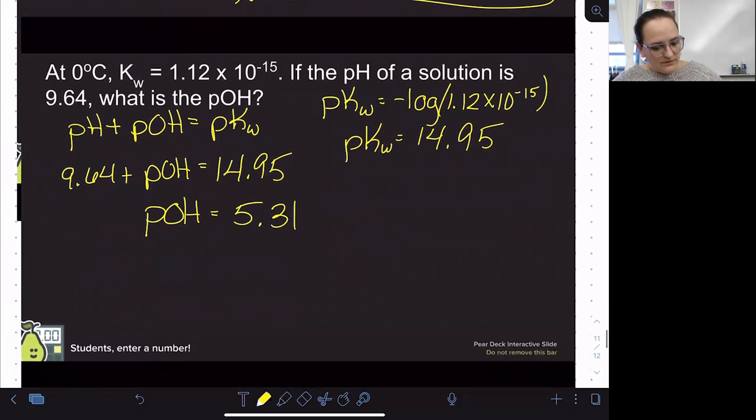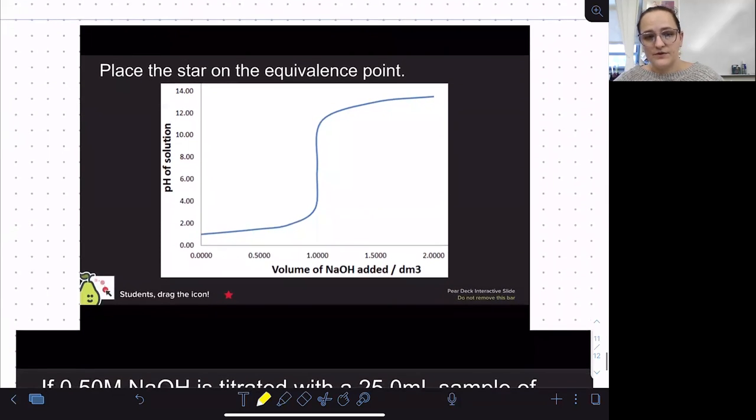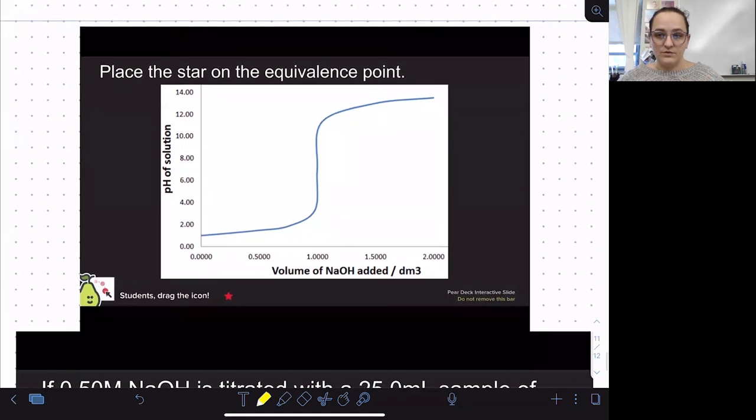So the last couple videos dealt with titrations and titration curves. So a titration curve is just a visual representation of how the pH is changing throughout an acid-base titration. So the first question here just asked you to place a star on the equivalence point, which is always right in the middle of this really steep section here, right at that inflection point on the graph. That is the point where you have added, in this case, just enough base to neutralize all of the acid that was in your original sample, or in a different titration it could be you've added enough acid to neutralize the base if you were going in the other direction.